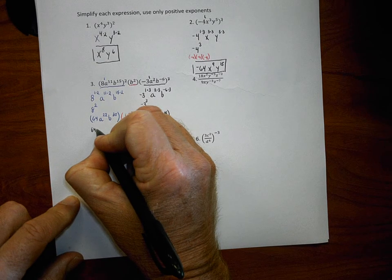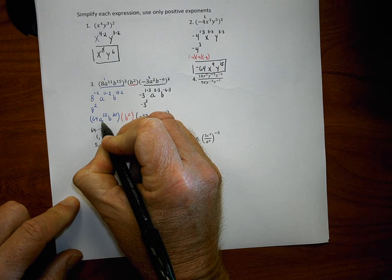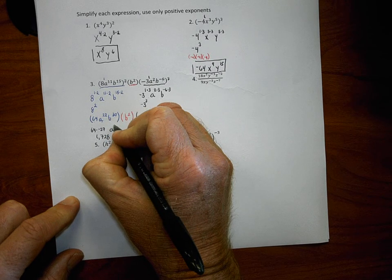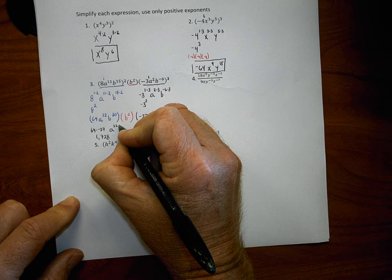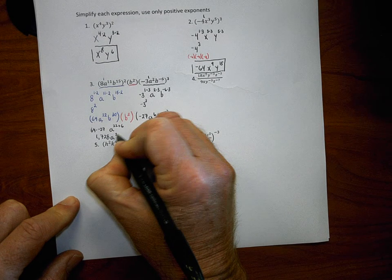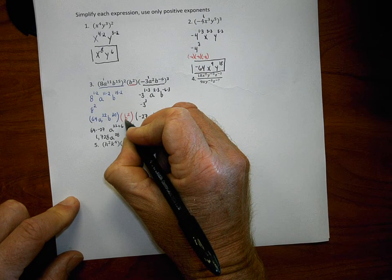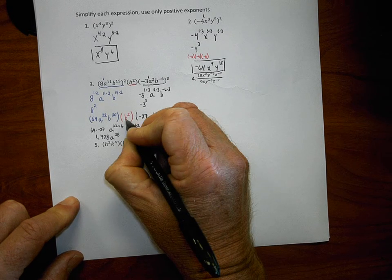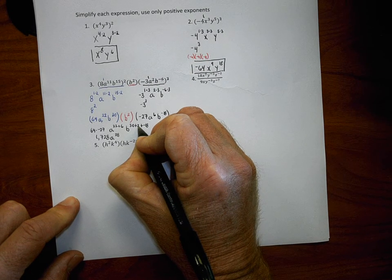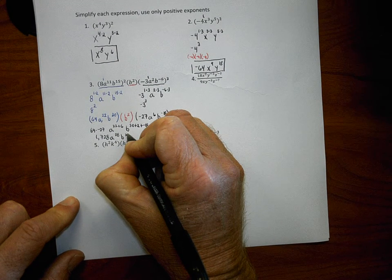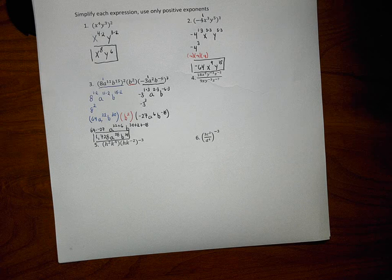Then I combine all the a bases: a to the twenty-second and a to the sixth — adding exponents when multiplying gives a to the twenty-eighth. For the b bases: exponents 30, 2, and negative 18 — thirty plus two is thirty-two, thirty-two plus negative eighteen is fourteen — giving b to the fourteenth. So number three simplifies to negative 1728 a to the twenty-eighth b to the fourteenth.